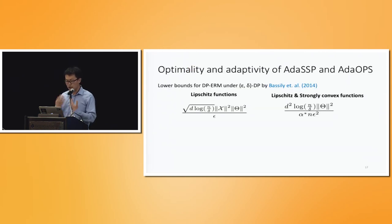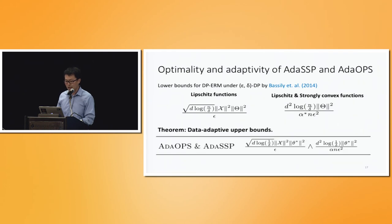The conclusions that we are getting for both algorithms is that they are able to attain the corresponding lower bounds in a data-adaptive fashion. So on top, we are looking at the two known information theoretic limits for learning differentially private linear regression. And we have this domain bound here and there. And this alpha star is the well-conditionedness of the dataset universe. And both algorithms that we propose manage to adaptively attain the smaller of these two.